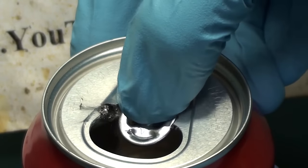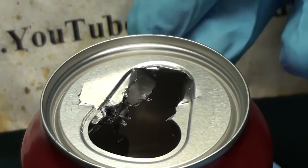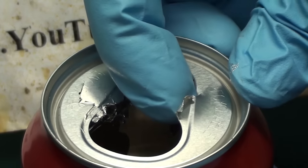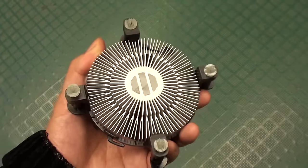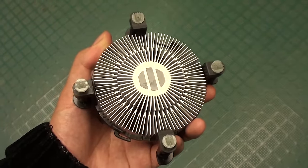Greetings fellow nerds, in a previous video I turned a coke can into soft metal using gallium. Let's try that again using an aluminum heatsink normally used for computer CPUs.